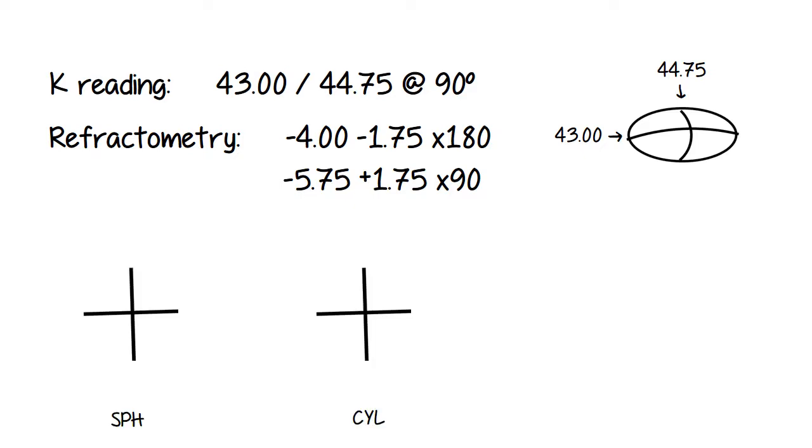So we'll fill in a spherical cross first with our sphere power minus 5.75. And then for our cylinder we know that the axis is going to be at 90 and that's not going to have any power. And 90 degrees away will be 180 and that will have our cylinder power of plus 1.75. So we are going to need a lens with a cylinder that is sitting on the counter. The flat side is at 90 degrees.